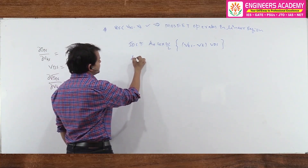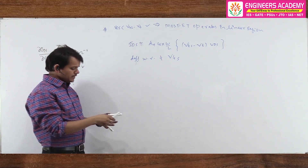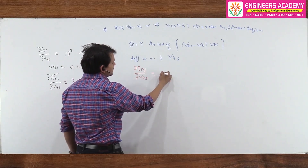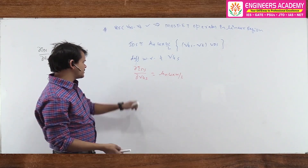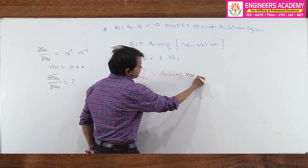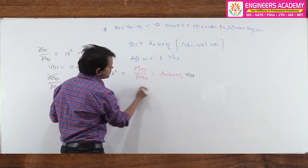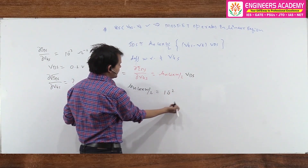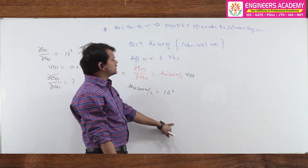Differentiating IDS with respect to Vgs: dIDS/dVgs = μn·Cox·(W/L)·Vds, since μn·Cox·(W/L) is constant and Vds is also constant when differentiating with respect to Vgs. This slope is given as 10⁻³. Since Vds = 0.1 V, we get μn·Cox·(W/L) = 10⁻³ / 0.1 = 10⁻² A/V².